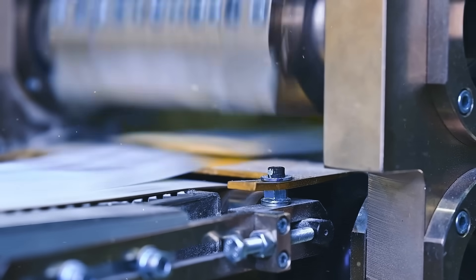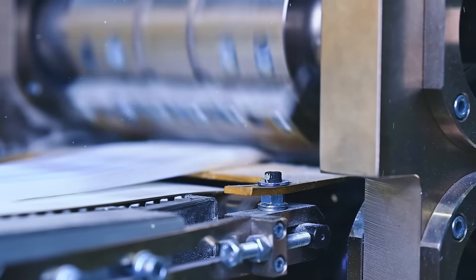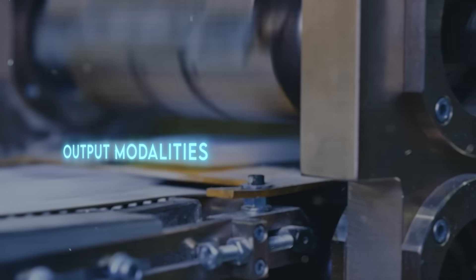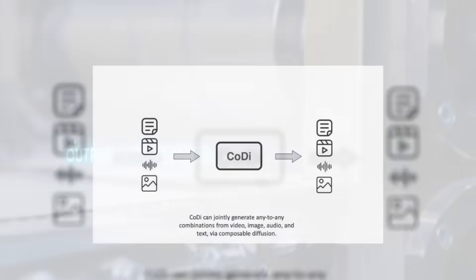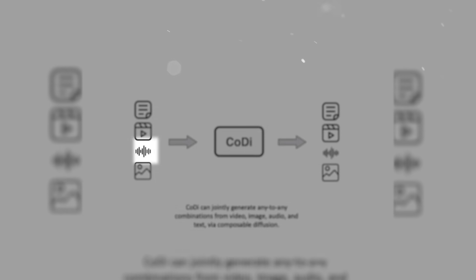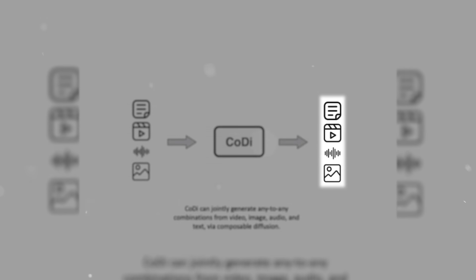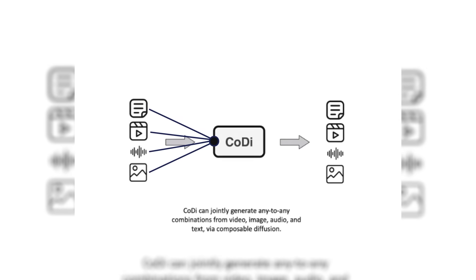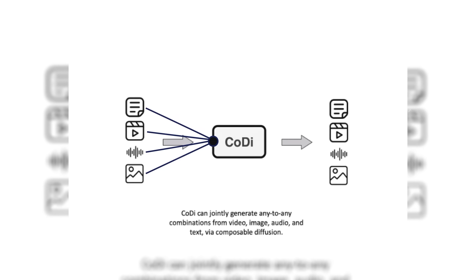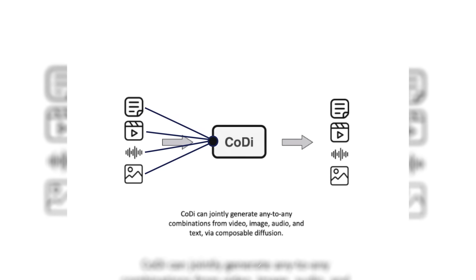CODI can take any combination of input modalities and generate any combination of output modalities, even if they are not present in the training data. Imagine you can just type in a few words or upload an image or a sound clip and get a whole video, song, or story out of it. Or you can mix and match different inputs and outputs to create something completely new and original. There are so many possibilities.